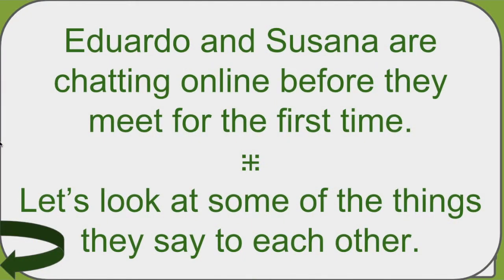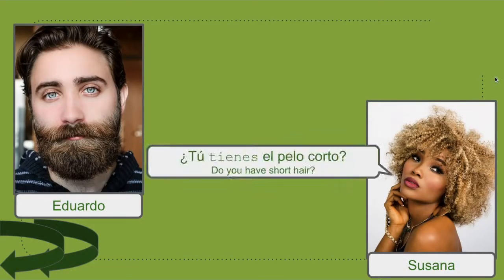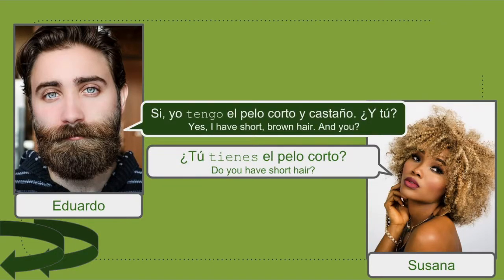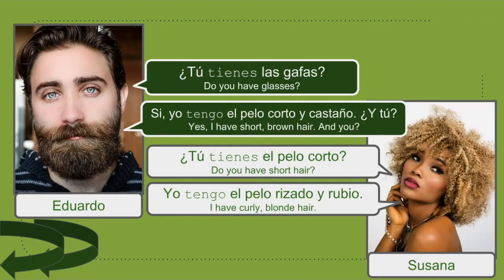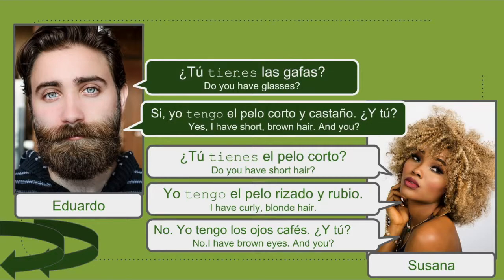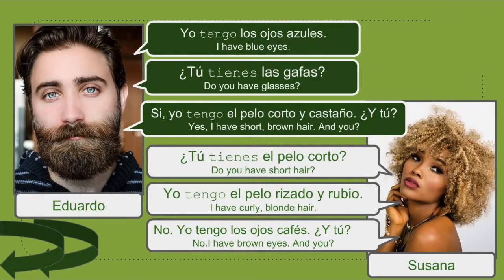In this scenario, Eduardo and Susana are chatting online before they meet for the first time. ¿Tú tienes el pelo corto? Sí, yo tengo el pelo corto y castaño. ¿Y tú? Yo tengo el pelo rizado y rubio. ¿Tú tienes las gafas? No, yo tengo los ojos cafés. ¿Y tú? Yo tengo los ojos azules.